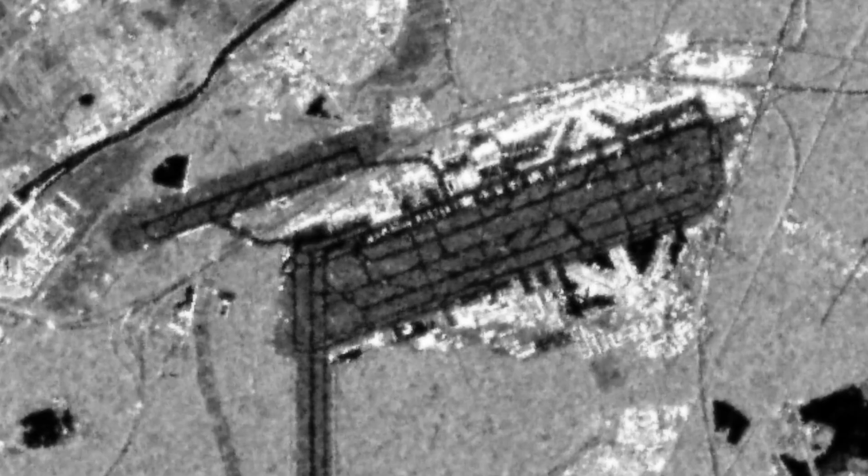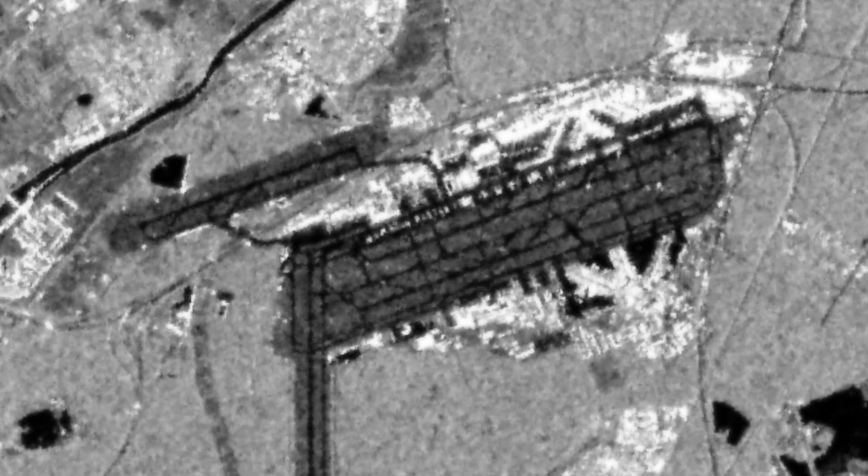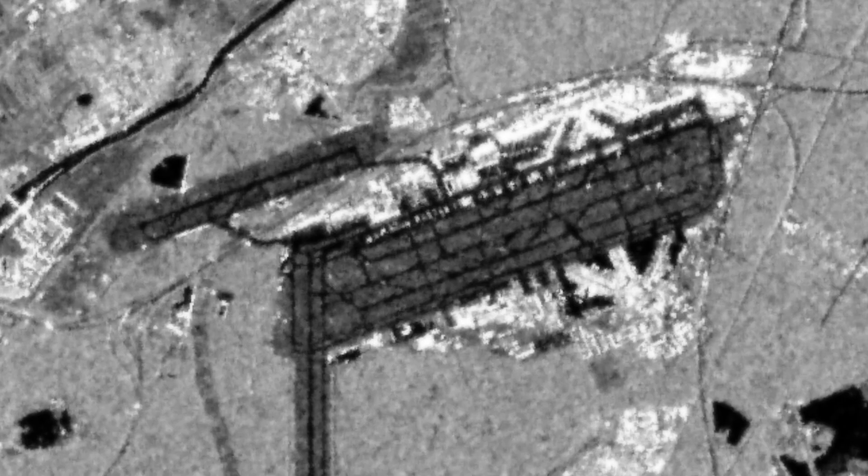Thus, the diffusely scattering grass areas between the runways are already significantly brighter, but are surpassed by the surrounding forests. And the vertical surfaces of the buildings scatter a very large portion of the signal back.